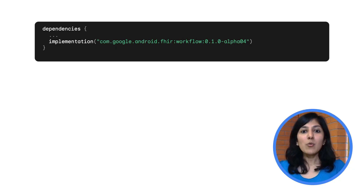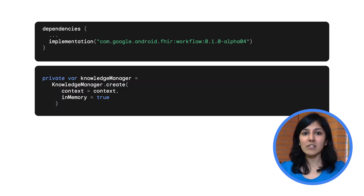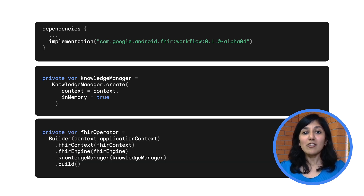Let's now set up the Workflow library in your application and dive into the Activity API. First, the FHIR workflow dependency needs to be added in the build file. To initialize the FHIR operator, a FHIR Engine instance needs to be created first — instructions are available in the introduction to FHIR Engine video. The FHIR operator also has a dependency on the Knowledge Manager, which manages knowledge artifacts on the Android device. You may initialize the FHIR operator instance using the FHIR context, the FHIR Engine instance, and the Knowledge Manager instance.